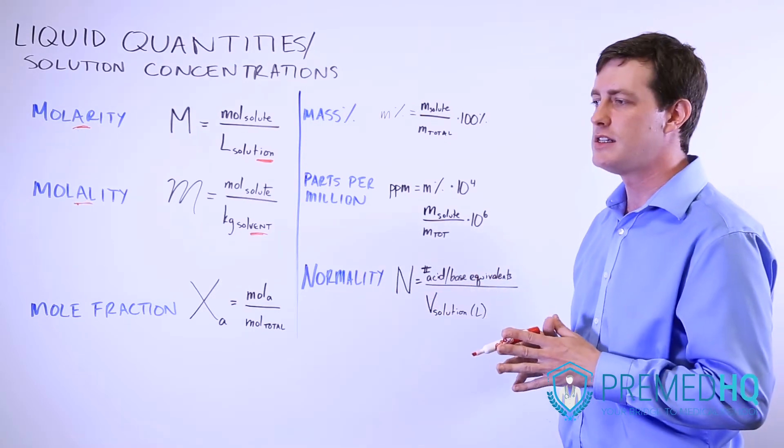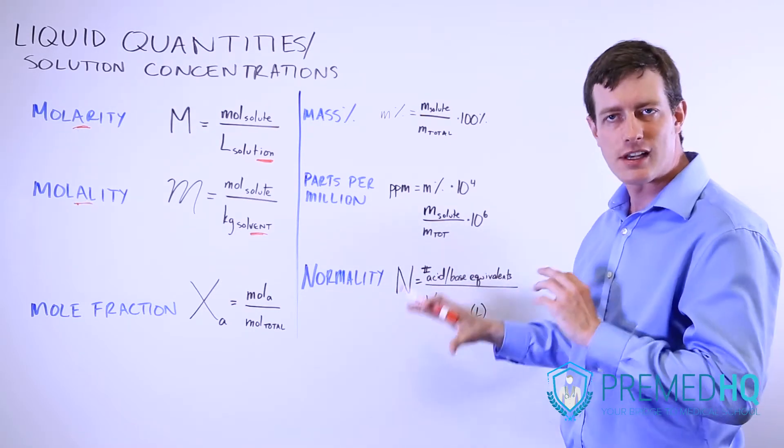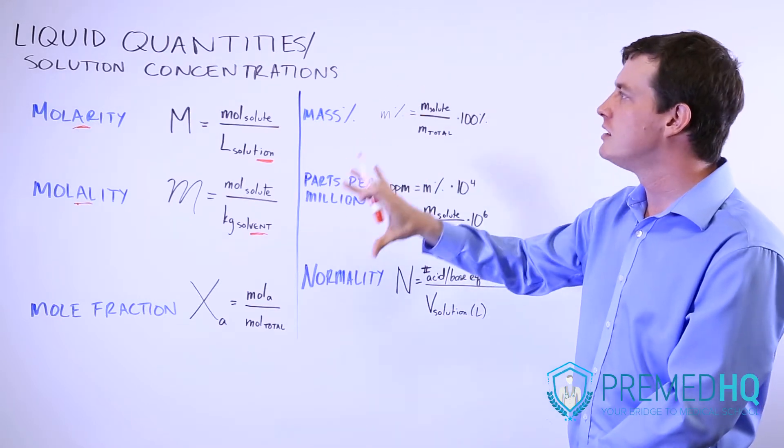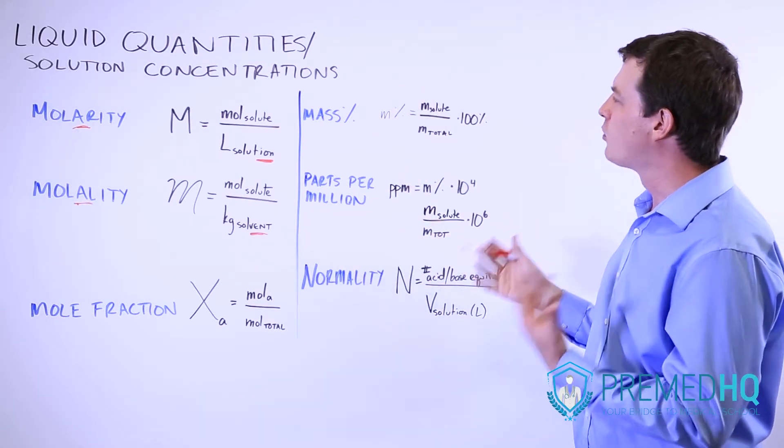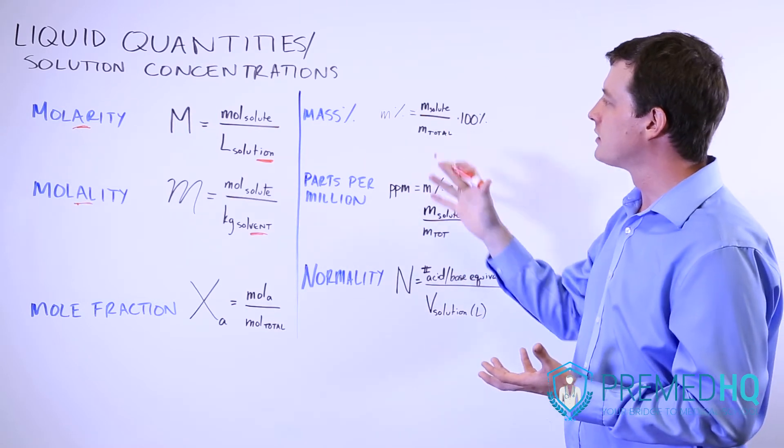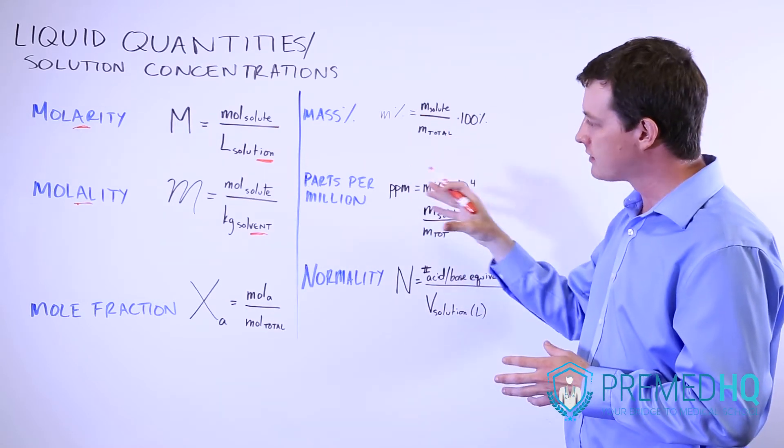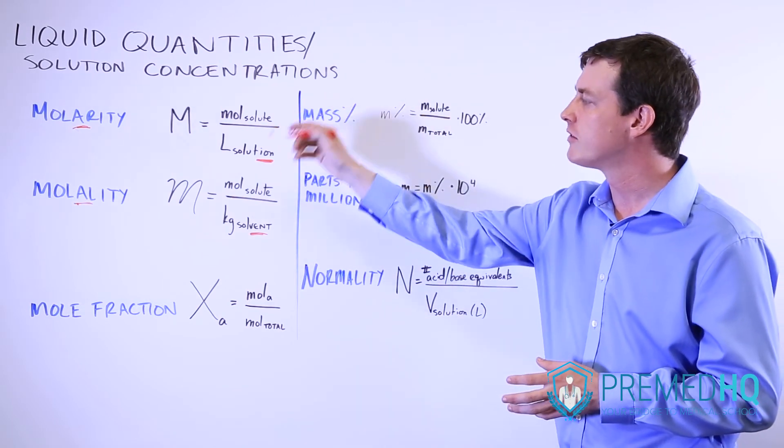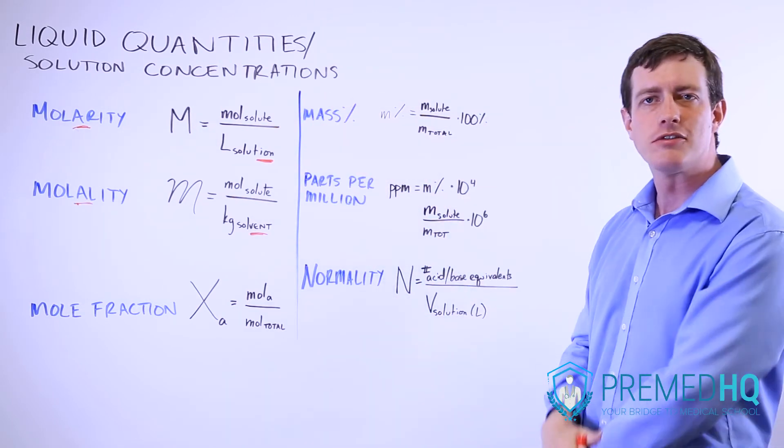Normality is something that you might see tested with titrations and other physical chemistry measurements. These are the major different ways of quantifying liquid solutions, and each of these has relevant points. You should be able to figure out what the difference is between all of these different measurements.